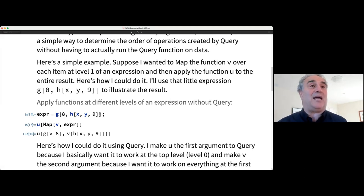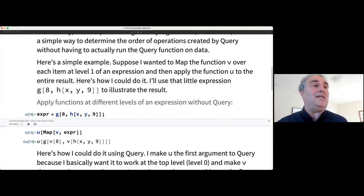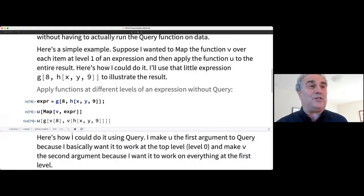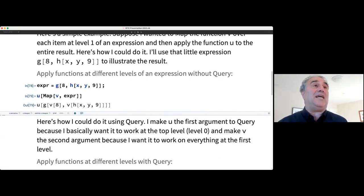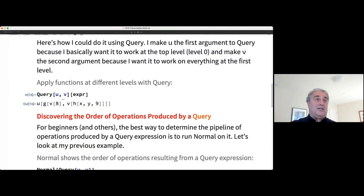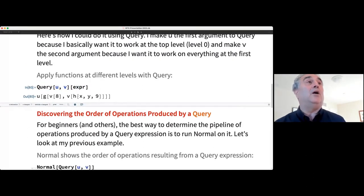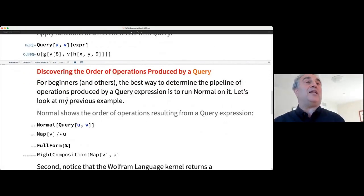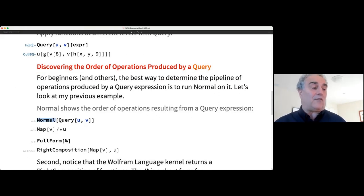All right. So supposing we have an expression, here's an abstract Wolfram language expression. And what we want to do is we want to map an abstract function V over that expression, and then apply U to the result of that mapping. So if you're in this session, you should know how to do this. And so here we are. Well, we're applying V to 8 and V to H of X, Y, 9. And then we're taking this sequence of parts and applying U to it. All right. So of course you can do that. You can still do that. Query doesn't stop you from doing anything you couldn't do in Wolfram language before. But here's how you would do it with query. You'd simply say query U operate at the highest level, V operate at the first level, and apply that to expression. And it does the same thing. Okay. Well, I've told you that's what it does, but how could you figure that out for yourself? And the key thing, if you take away one thing from this talk, it is that normal is your friend.